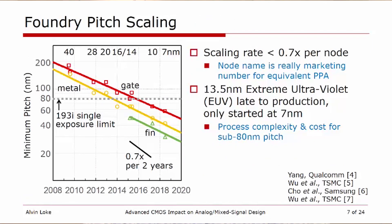Looking at foundry pitch scaling, compared to the historical 0.7x scaling factor per node every two years, the scaling rate has actually fallen below 0.7x per node. The node name is really more of a marketing number for equivalent power-performance-area. This is largely because extreme ultraviolet lithography has been late to production, only starting at 7nm. In order to achieve around 80nm pitch, this has resulted in lithography innovations, as well as increased process complexity and cost.